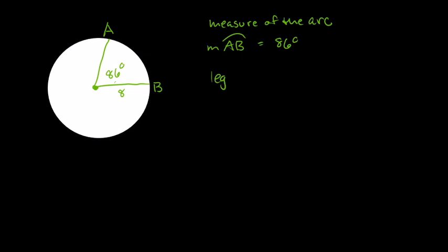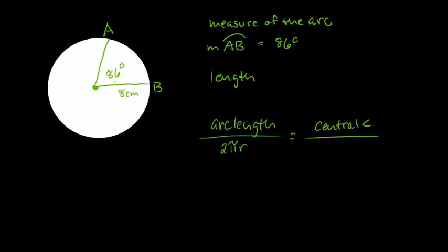The length, and that is something that would, for example, be measured in centimeters. And we're going to be using a proportion in order to solve for this arc length. So we've actually used this proportion before. The arc length, that's a piece over the entire circumference. So if you remember, the formula for circumference is 2πr, should be equal to the central angle over the total degrees in a circle, which was 360. This should look familiar.